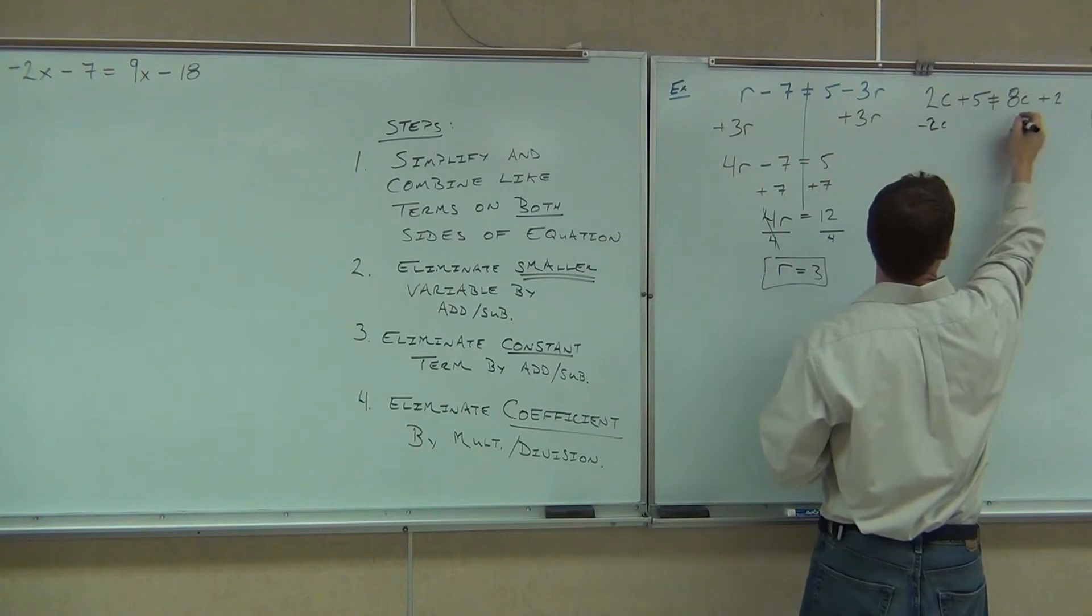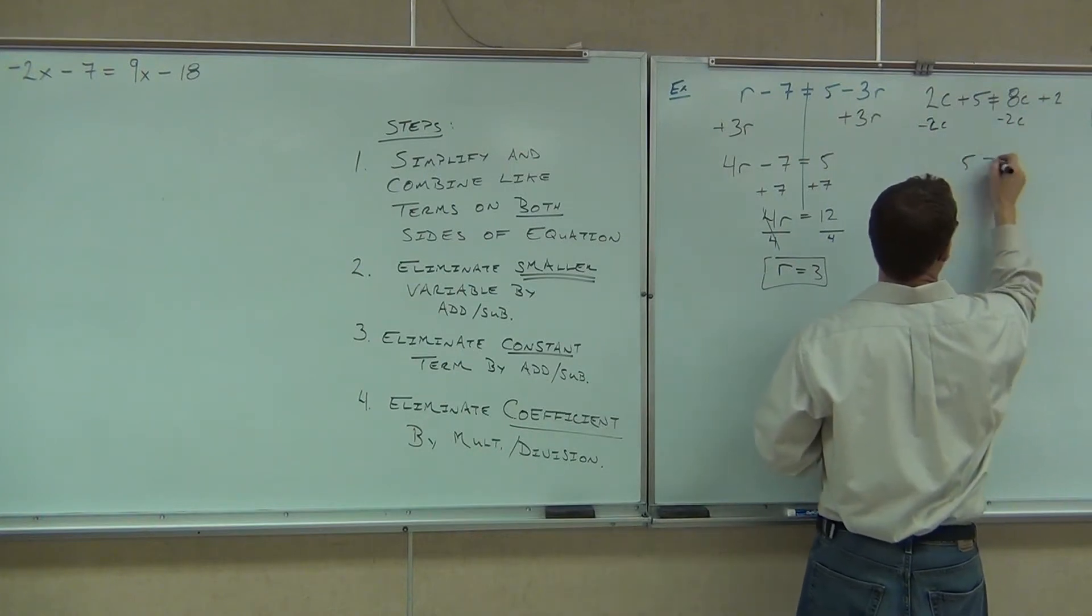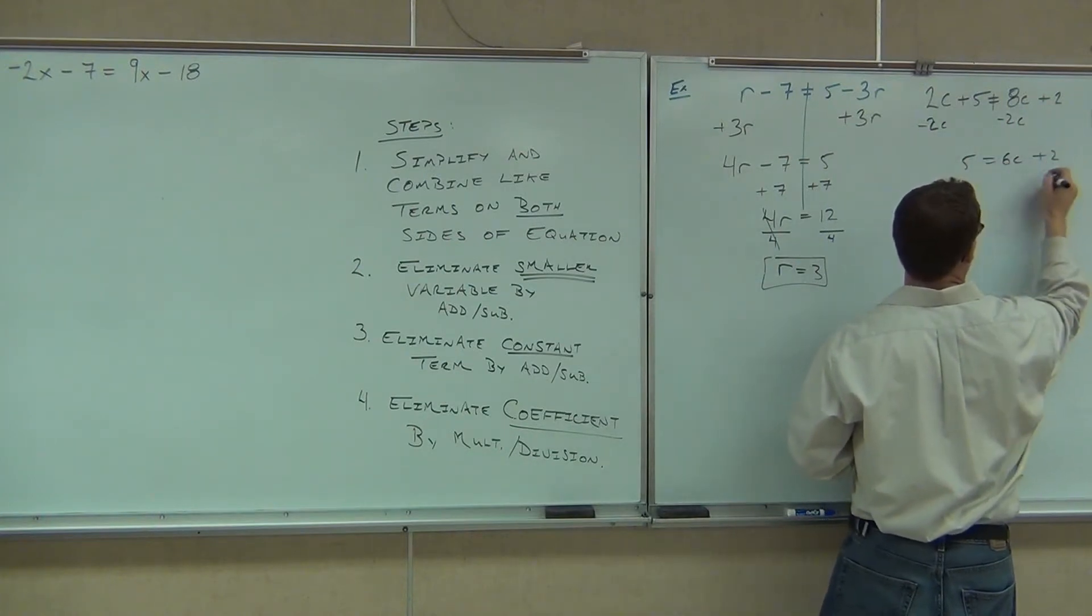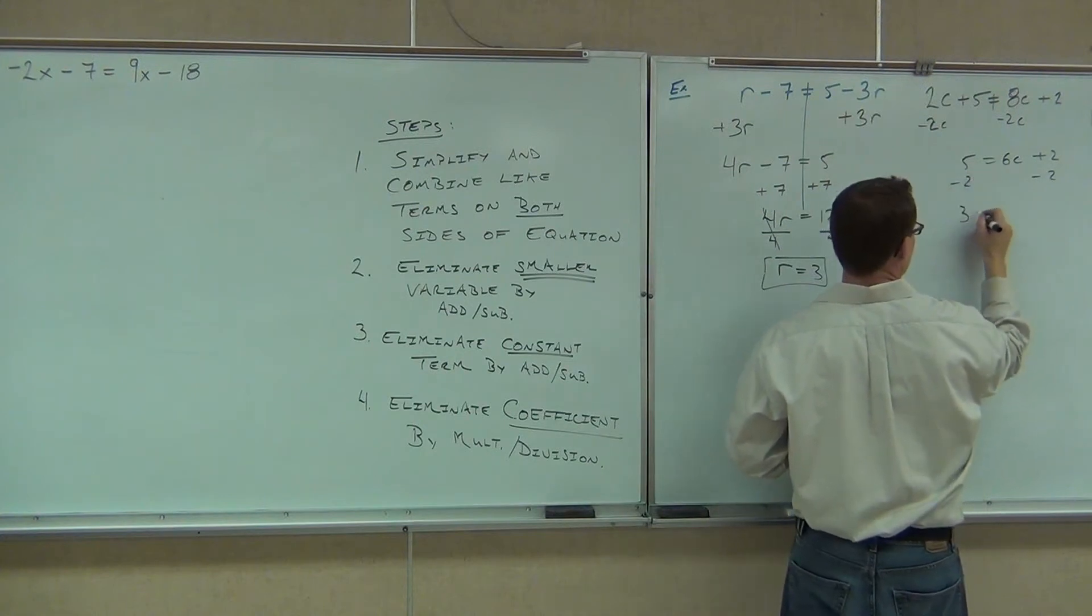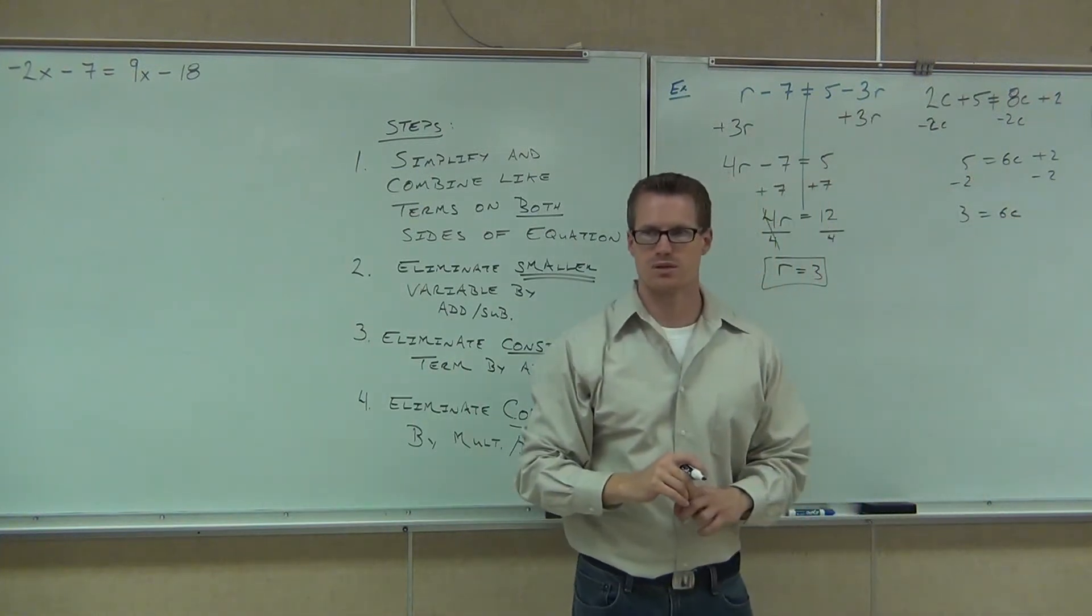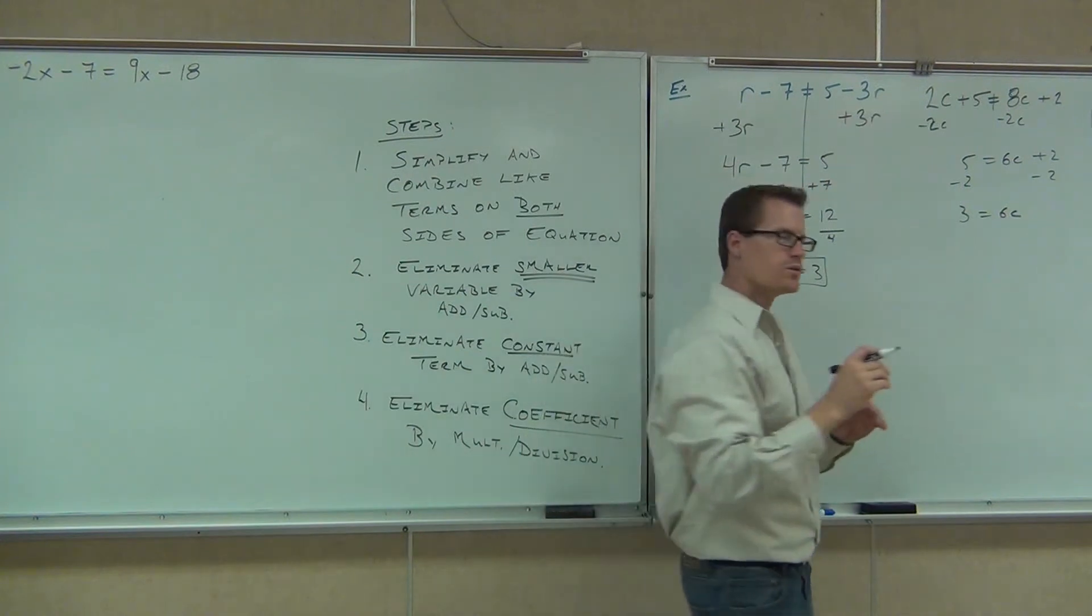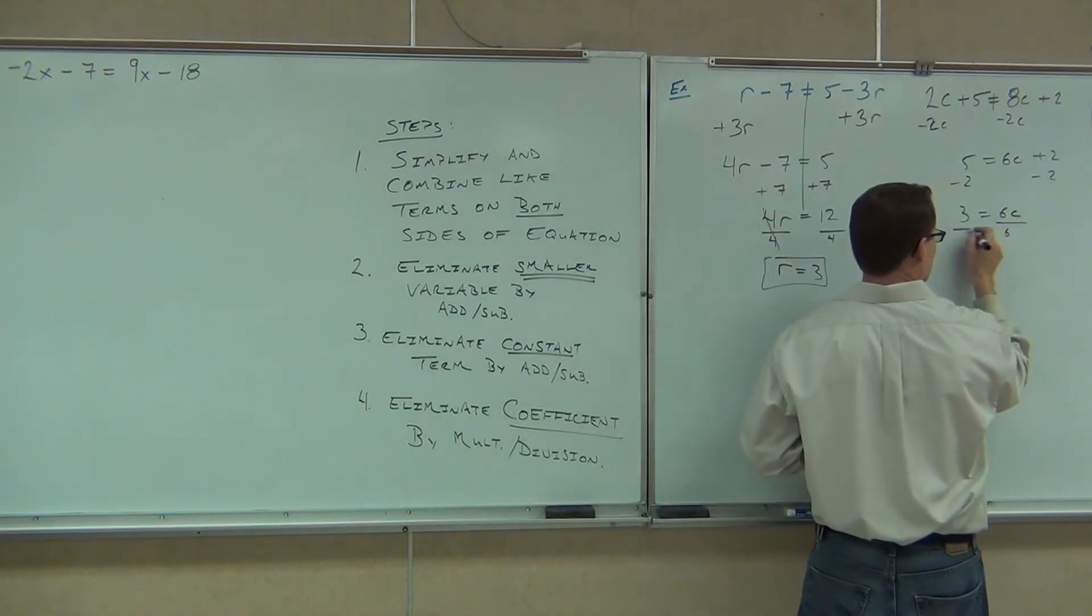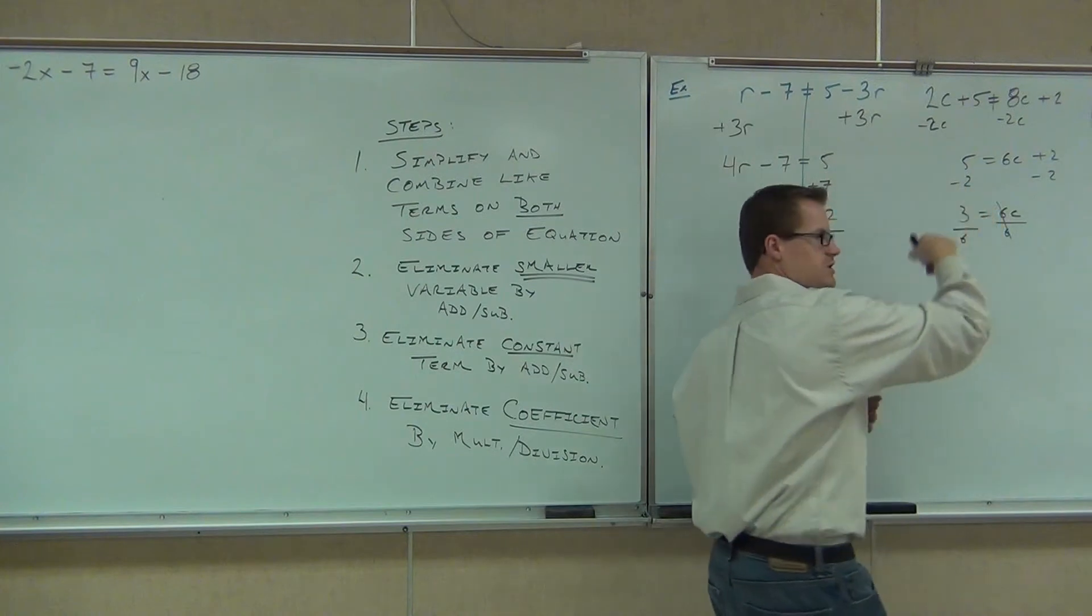You do subtract 2c, and you get 5 equals 6c plus 2, and you do subtract 2, and you get 3 equals 6c. However, what are you dividing by, 3 or 6? So if you divide by 6, you get 3 over 6.